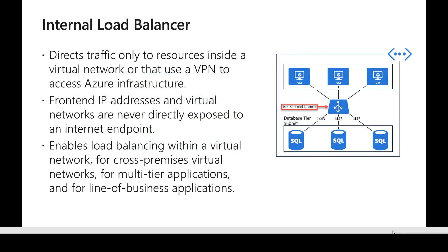The other category is internal load balancer. The difference is that a public load balancer is used for traffic coming from a public IP address, whereas the primary use case for an internal load balancer is when you want to load balance traffic across multiple instances within your virtual network. In the example shown, there is a backend pool of SQL databases, and traffic flows between application servers and the databases. We use the internal load balancer to distribute that traffic, with a frontend IP that is an internal IP, and similar load balancing rules.